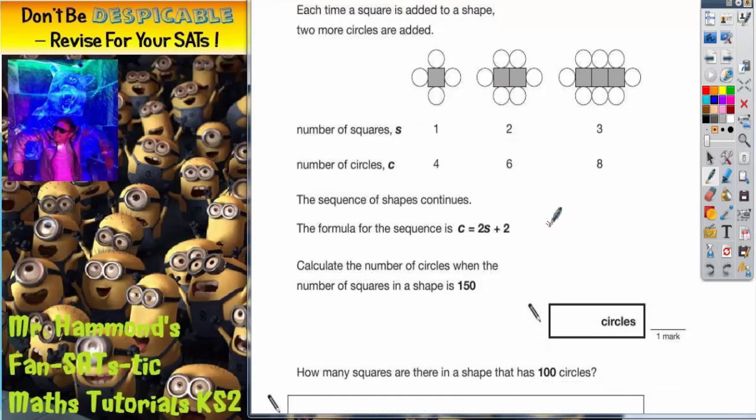We could say if you start with the number of squares, you times it by two, so two lots of the number of squares, then you add two, and this gives you the number of circles.